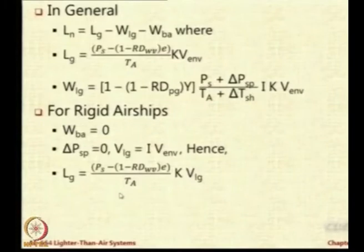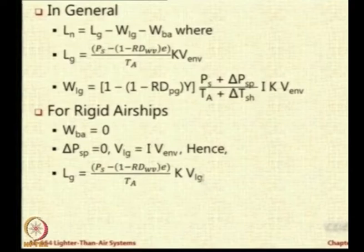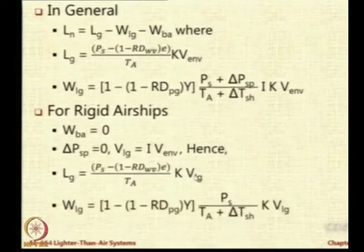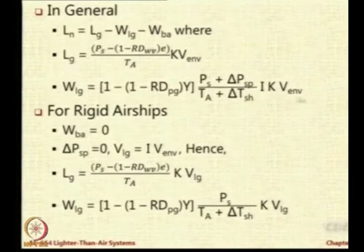Put this in the expression and you will get that the lifting gas, instead of using V_ENV, we will use directly V_lifting_gas because the envelope is not containing the entire gas. The gas available is only V_ELG. Similarly, W_ELG, we will knock off this delta P_SP here and we will knock off this V_ENV as I into V_ENV is already there.